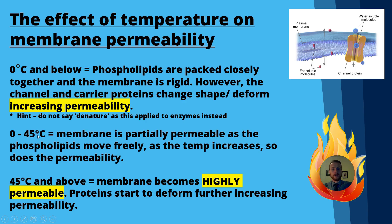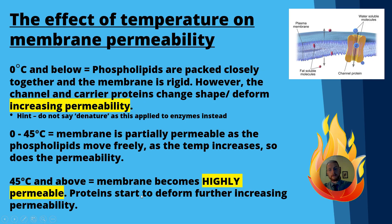Between zero and 45 degrees, the membrane is partially permeable as the phospholipids move freely. As temperature increases, permeability will also increase. At 45 degrees and above, the membrane becomes highly permeable because the proteins start to change shape, further increasing permeability. So at either extreme — very cold or very high temperatures — permeability will increase.